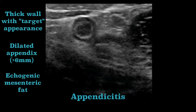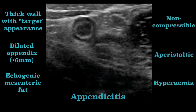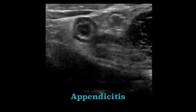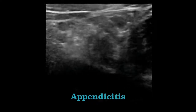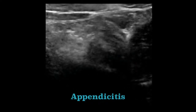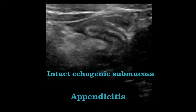But there are even more things to note with ultrasound. As ultrasound is a dynamic test, you can also look for compressibility and for peristalsis. The absence of both of these features further suggests appendicitis. Color Doppler assessment allows you to look for hyperemia, which is another useful supportive feature. In this example, we can see that the submucosa, although echogenic, is intact.